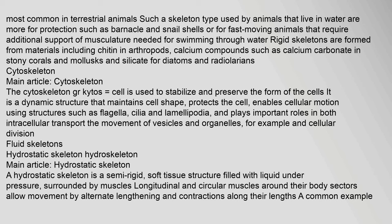The cytoskeleton (GR: kytos = cell) is used to stabilize and preserve the form of the cells. It is a dynamic structure that maintains cell shape, protects the cell, enables cellular motion using structures such as flagella, cilia and lamellipodia, and plays important roles in both intracellular transport — the movement of vesicles and organelles — and cellular division.